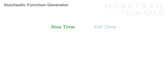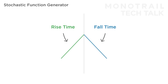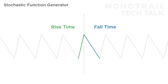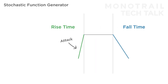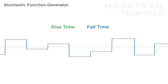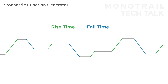Rise time and fall time are the two core parameters used to control a function generator. Depending on how and with what input signal the module is used, these two parameters have a different effect. For example, if you use a function generator as a looping envelope or LFO, the rise and fall time control both the shape as well as the frequency of the looping shape. Used as a triggered envelope, rise and fall set the attack and decay stage. Used as a gated envelope, rise and fall set the attack and release. When used to process incoming voltages like a sample and hold signal or a 1 volt per octave signal, rise and fall act as a slew limiter for increasing and decreasing voltages.